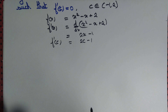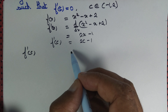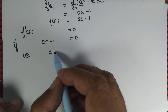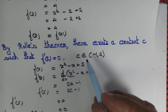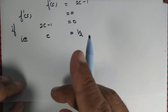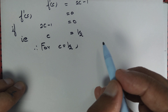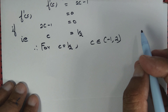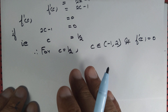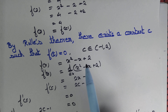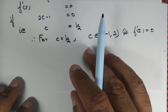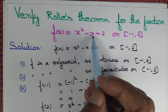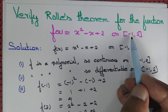We have f'(c) = 2c - 1. Setting f'(c) = 0 gives 2c - 1 = 0, so c = 1/2. Does c = 1/2 lie on the interval (-1, 2)? Yes — 1/2 is greater than -1 and less than 2. Therefore for c = 1/2, c belongs to (-1, 2) and f'(c) = 0. Thus we have verified Rolle's theorem for f(x) = x² - x + 2 on the interval [-1, 2].